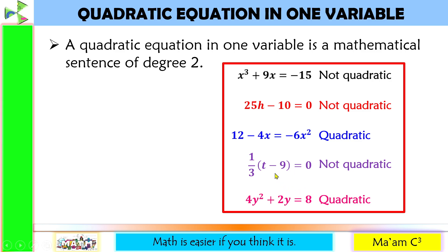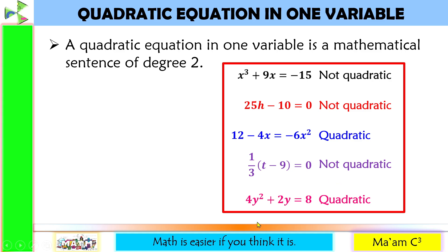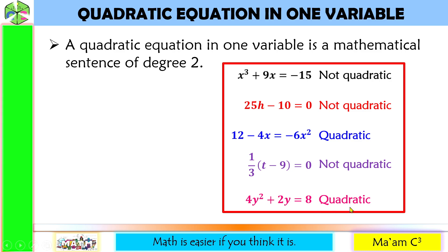Number 4, the exponent of the variable here is 1, so this is not quadratic. And for the last one, the degree of this equation is 2. Therefore, this is quadratic. As easy as that.